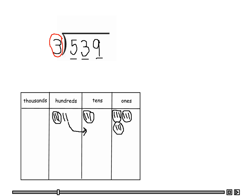We know that for one hundred, there are ten tens. Let's identify that — changing the color: one, two, three, four, five, six, seven, eight, nine, and ten. We can make three groups of three: here's one group of three, two groups of three, and three groups of three, with one left over.